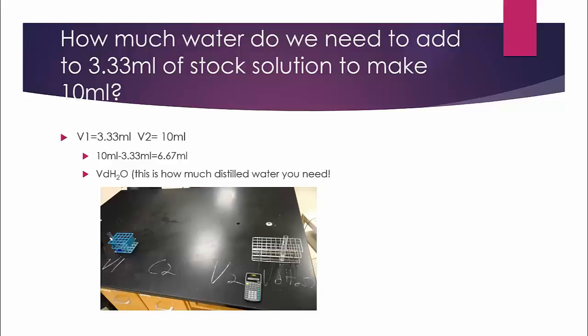Your V1, you know we have 3.33 mils and we need 10, so find the difference between those two numbers. In this case, it's 6.67 milliliters of water. That is the volume of distilled water that you need to measure out and then add to the stock solution.